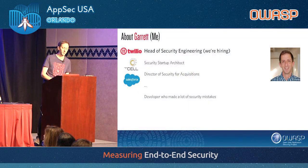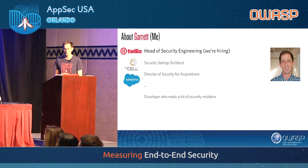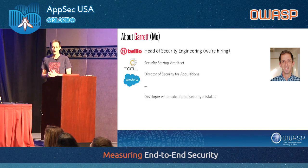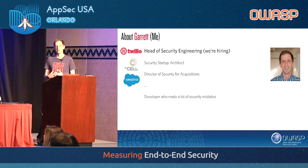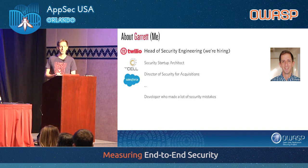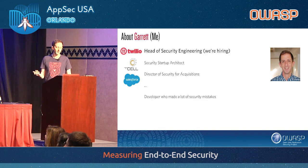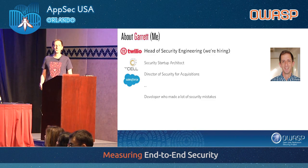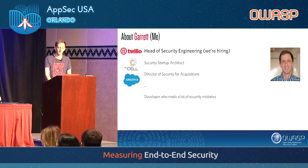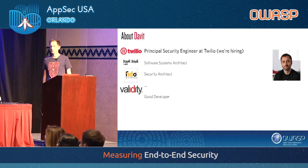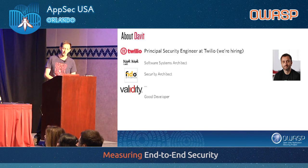I'll be talking about measuring end-to-end security. This is the result of a conversation I had with our CISO and one of my co-workers, David. A little bit about me: I'm the head of security engineering at Twilio. That includes product security, cloud security, corporate security, and we've just added automation engineering as well. David could not join us today but he is a principal security engineer at Twilio.